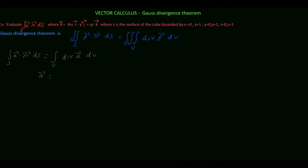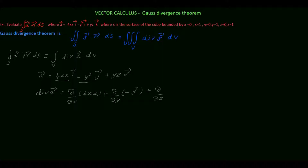The given A vector is 4xz i vector minus y squared j vector plus yz k vector. First, we have to find divergence of A vector, which is equal to d/dx of f1, the coefficient of i vector which is 4xz, plus d/dy of f2, the coefficient of j vector which is minus y squared, plus d/dz of f3, the coefficient of k vector which is yz. Differentiating: 4z is a constant, differentiation of x is 1, differentiation of y squared is minus 2y, differentiating yz with respect to z is y. This gives 4z minus 2y plus y, which equals 4z minus y.